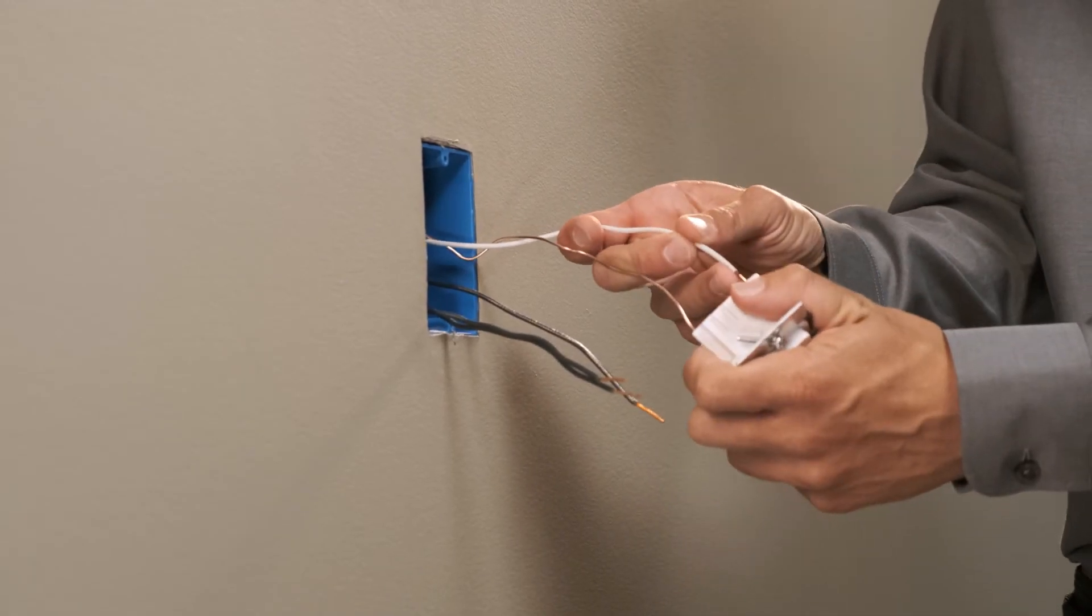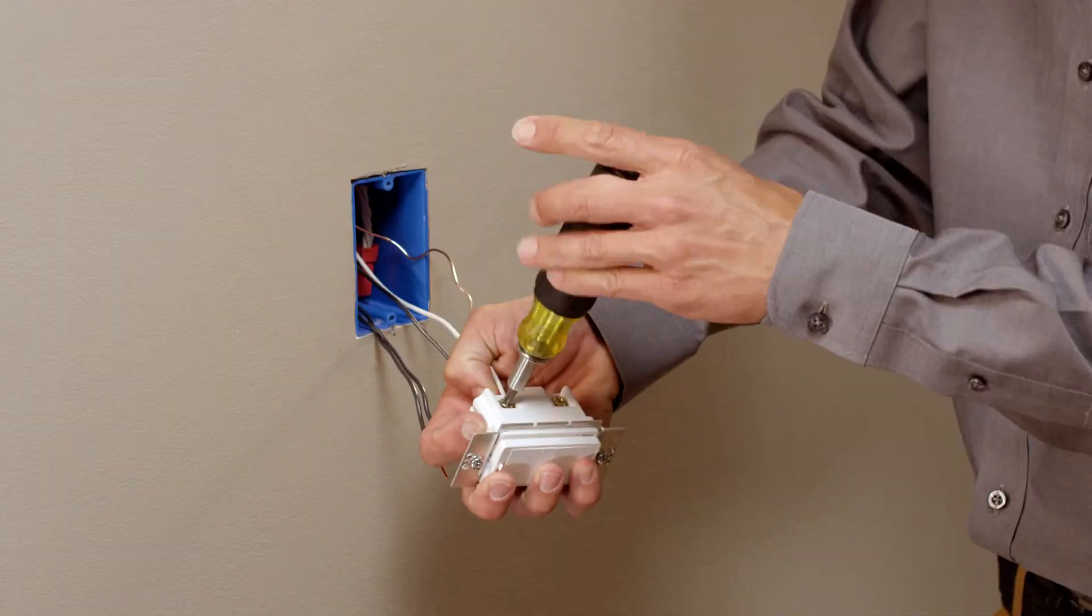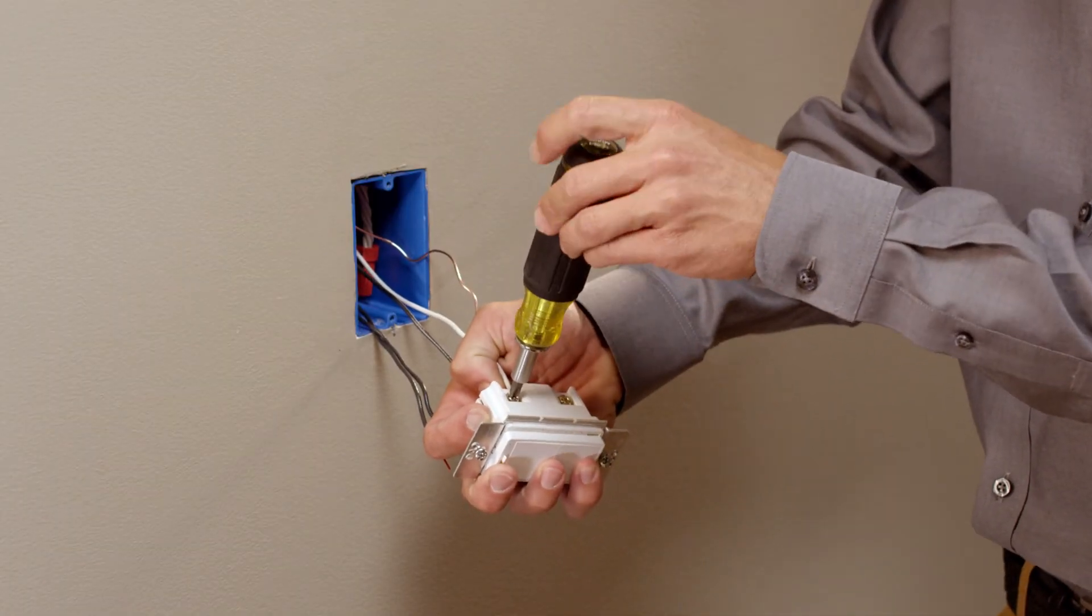On the other end of the jumper, connect to the device. Tighten the terminal screw until the wire is firmly held.